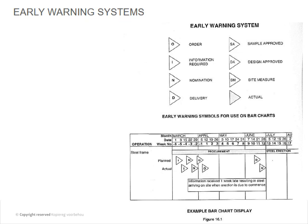Then early warning systems — this is a very practical thing that you guys can use. Many of these programs have tools like little diamonds or arrows that help you locate areas. So you've got items like order, information required, nominations, delivery, sample approval, design approval, site measurements, and then actual progress. This is just a few items you can use. This is more practical — I'm not going to test you guys on this.